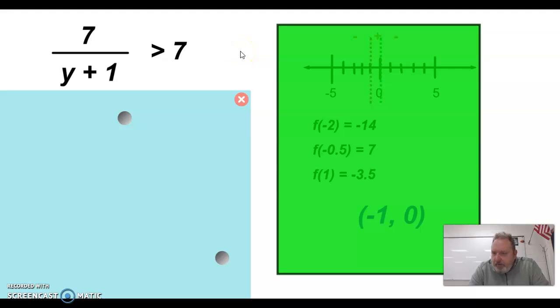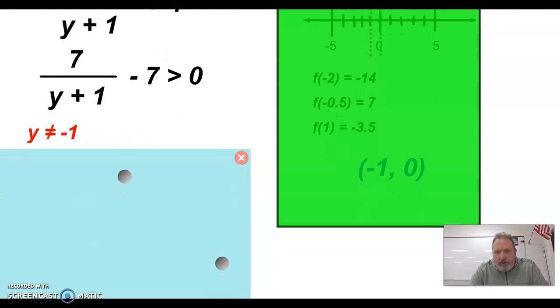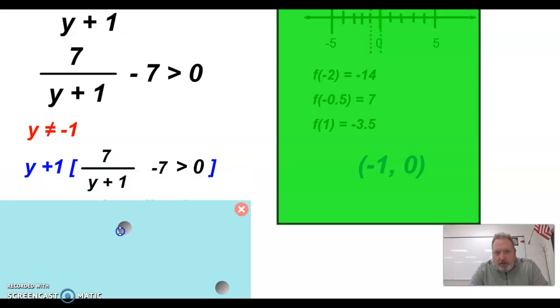So when we look at this inequality for today, first of all, you notice that it's not greater than zero. It's greater than seven. So our first step is we're going to have to move the seven over so that we have an inequality that, in this case, is greater than zero. If you look at the denominator here, you can see that negative one is going to give us an undefined value. And so that's our very first critical point, if you will. Y cannot equal negative one. And that's because it will make this undefined. Now, to find the zero of this particular inequality, we actually have to multiply through by y plus one. So we're actually going to have to solve this. So we're going to multiply the entire inequality by y plus one. We'll treat it like an equation at this point.